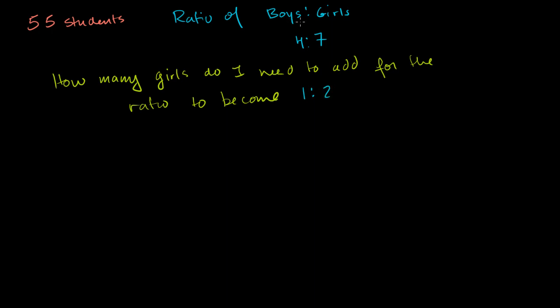And this is the ratio of boys to girls. I'm not switching the ratio on you. So right now for every 4 boys, I have 7 girls. I want to add some girls so that the ratio becomes for every boy, I have 2 girls.